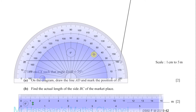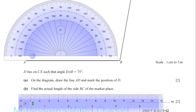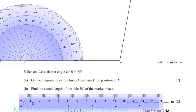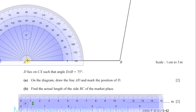With the protractor, I need to measure angle DAB as 75 degrees. I put the vertex or center of the protractor on vertex A, and I measure the angle going in this direction. You can see the scale on the inside starts from 0 — we go along to 70, and 75 is about here.